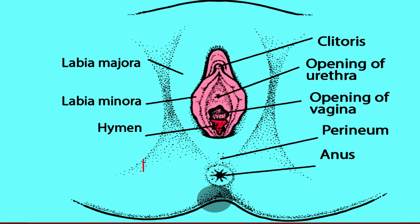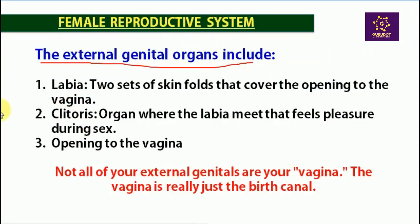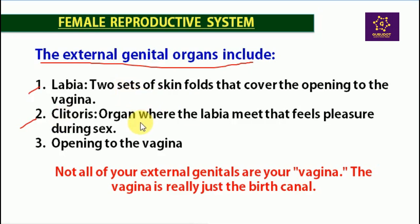Now let's look at female external genitalia. The external genitalia organs include the labia — two sets of skin folds that cover the opening of the vagina. Labia is a lip-like fleshy structure. There are two types: labia minora and labia majora. Then comes the clitoris, the organ where the labia meets, which is a female erogenous organ capable of erection under sexual stimulation.